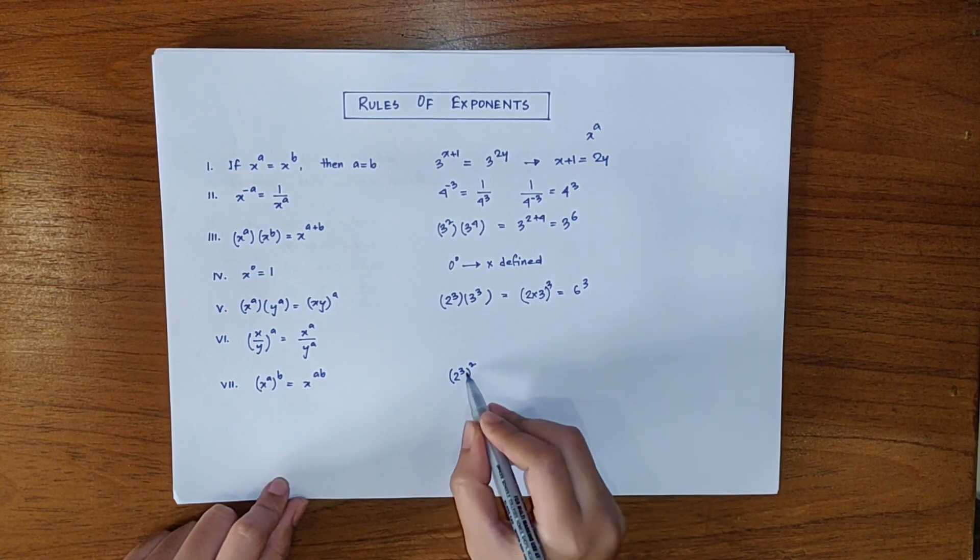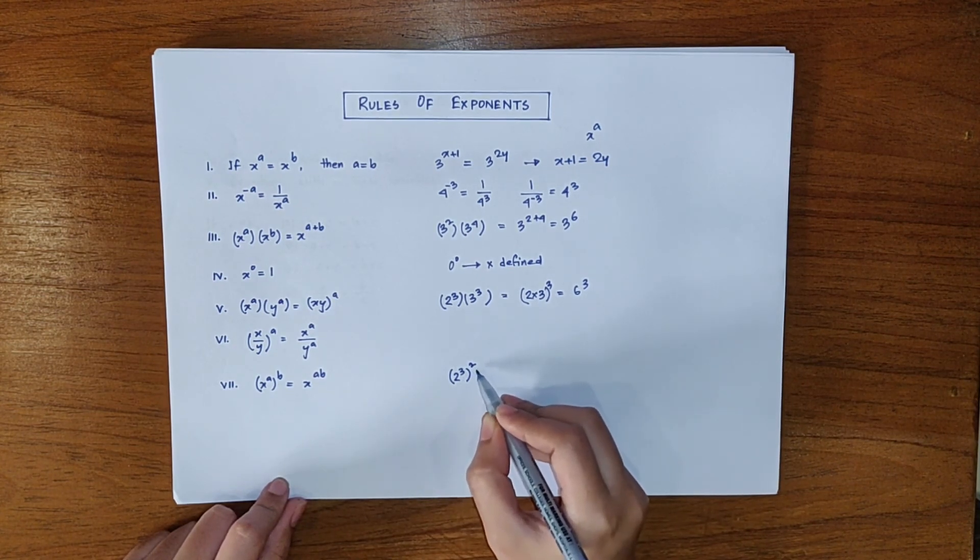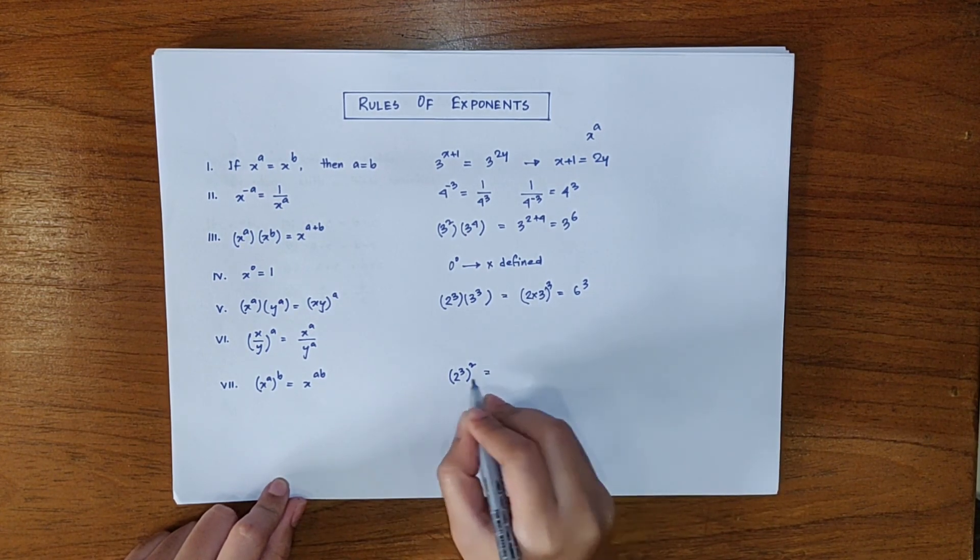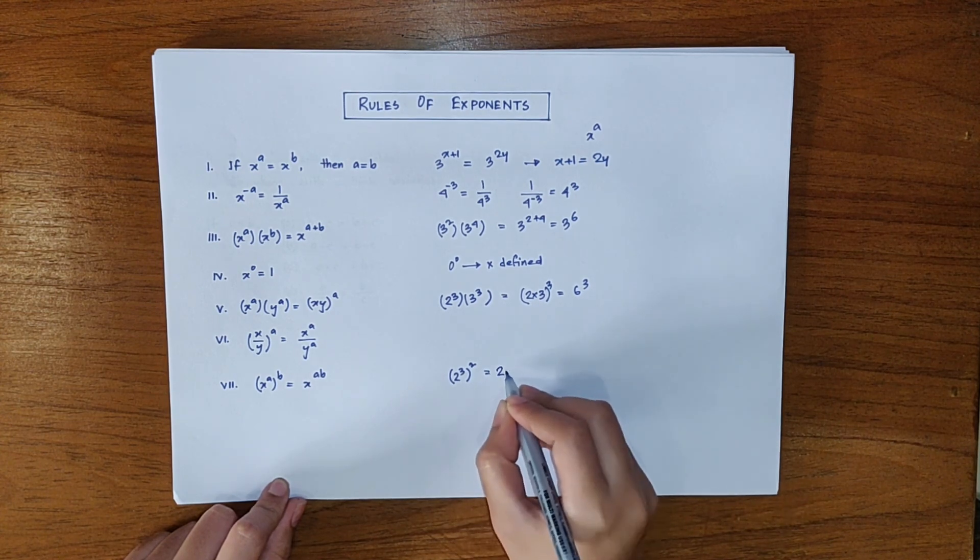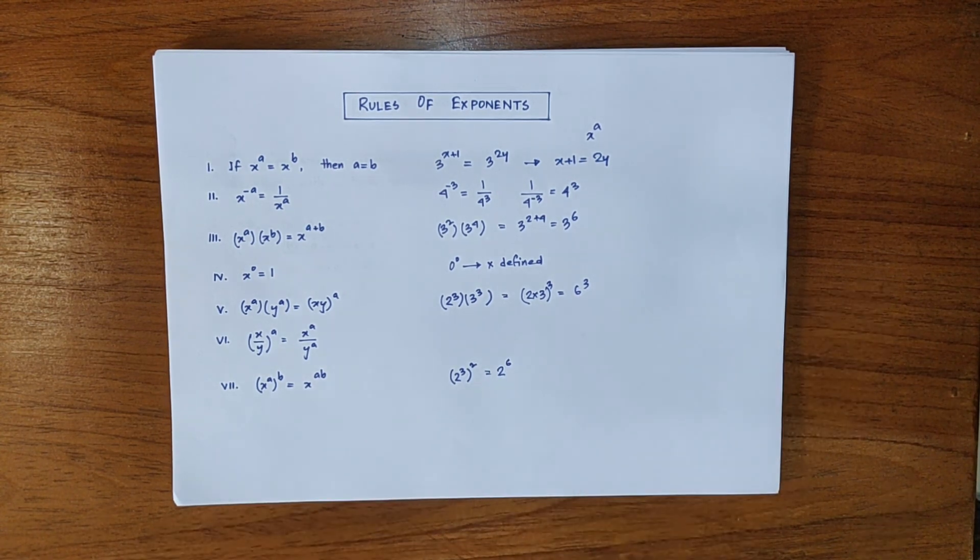Now in this case 2 cube is raised to another power 2. So 2 and 3 will be multiplied and the answer will be 2 to the power 6.